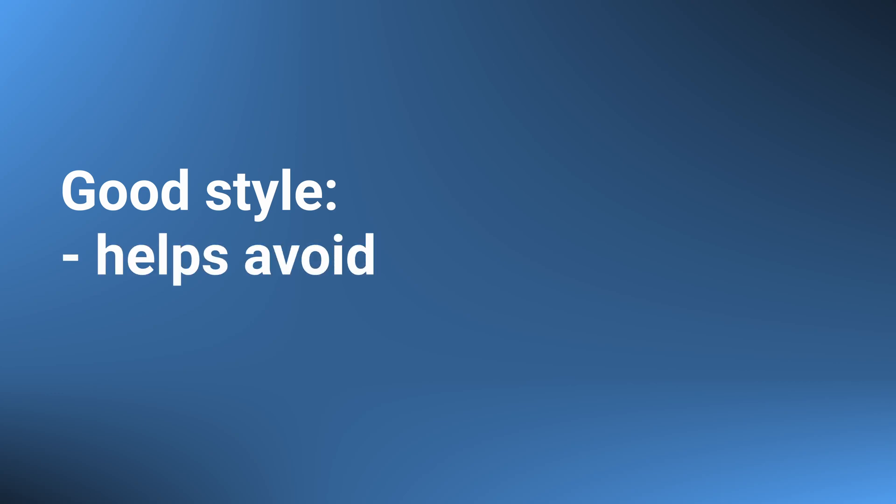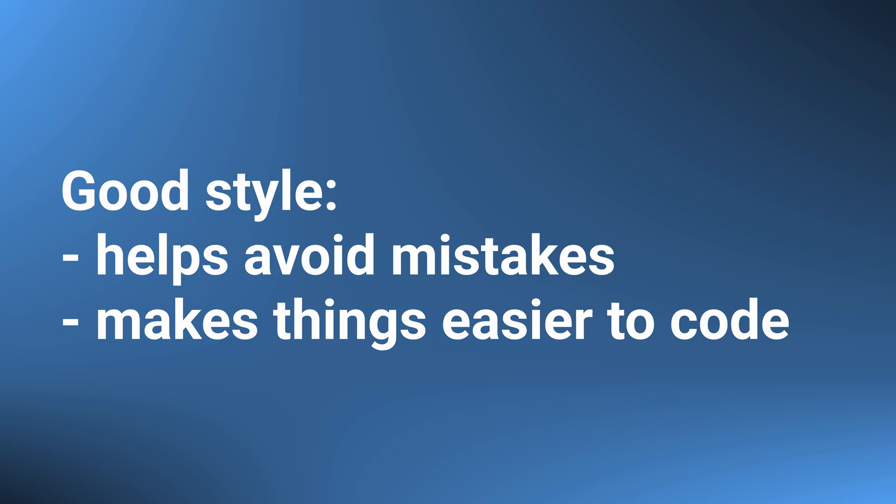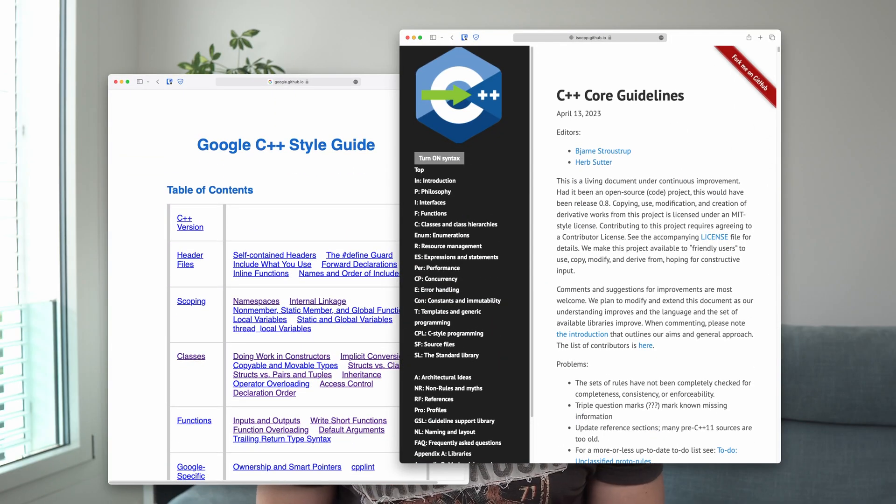Jokes aside, in the previous video about move semantics, we had an example struct that made use of copy and move assignment operators. It turns out there are rules to follow when implementing these operators and their friends. As a result, the struct in that video did not really follow a good style. Good style is a style that helps us avoid mistakes and makes things easier to implement. There are many rules about good style when it comes to writing classes, but I don't want to state these rules out of context.